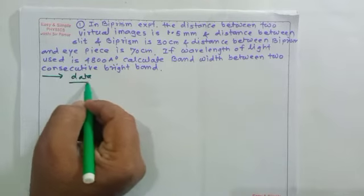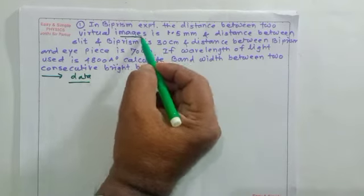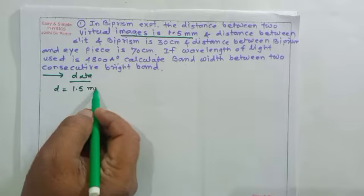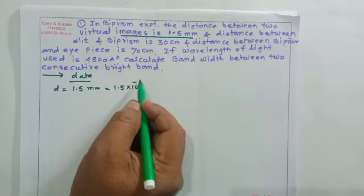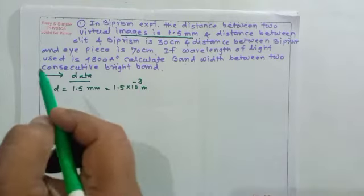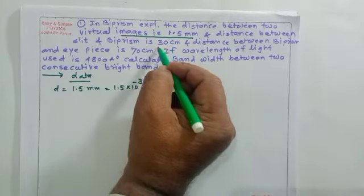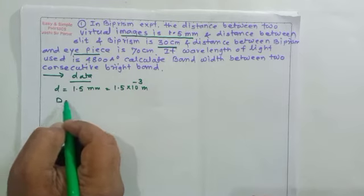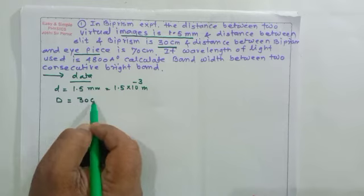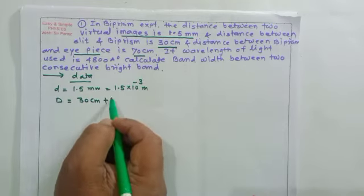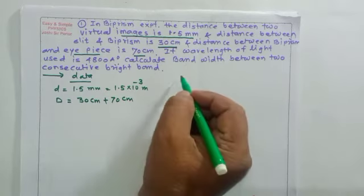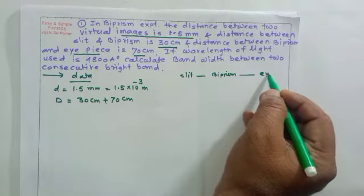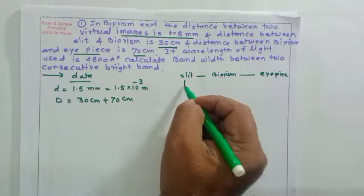So here the given data: the distance between two virtual images, small d, is given as 1.5 mm, which is 1.5 × 10⁻³ meter. Distance between slit and biprism is 30 cm. The distance between biprism and eyepiece — see here, the distance between slit and eyepiece will be the summation of 30 cm and 70 cm, because first of all the slit is given, then the biprism, and after that the eyepiece.